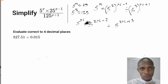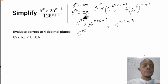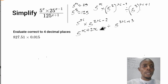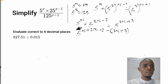Since they all have the same base of 5, we pick one base. Note that multiplication changes to plus and division changes to minus. So the exponent becomes: s plus (2s minus 2) minus (3s plus 3). We must open the bracket carefully — the minus sign multiplies both terms inside, so it becomes minus 3s minus 3.